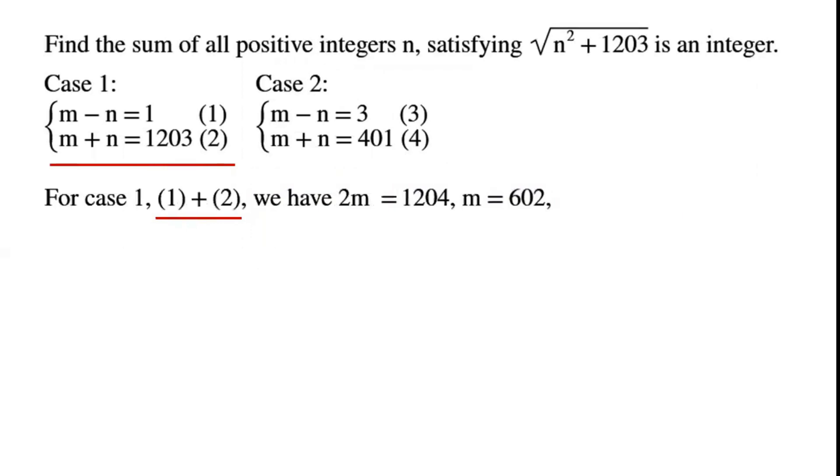Case 1: Adding the equations gives 2m = 1204, so m = 602.